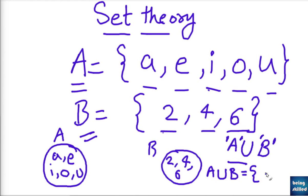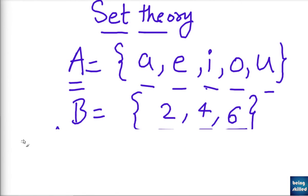So union of A and B will contain each and every element of both set A and set B. So we will have a, e, i, o, u, then 2, 4, 6. So all of the elements which are there in set A and set B will be there in A union B. So we just learnt about union which is denoted by U-like symbol which will contain each and every element of the sets involved.